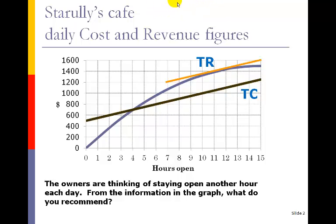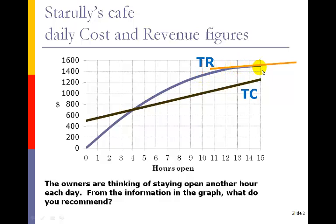That's an important indicator because right then and there we're basically reaching the maximum profit possible. The maximum distance between the two graphs occurs when the slopes are the same. Then around the 14th hour, the slope of the orange revenue line is actually less steep — less value — than the cost line. That means we're not bringing in as much revenue as we are cost. So I would recommend not opening an extra hour, because the trend of the revenue graph is leveling off and getting less steep. The slope on revenue is less than the slope on cost, and that's how we can use slope and rate of change to make actual business decisions.